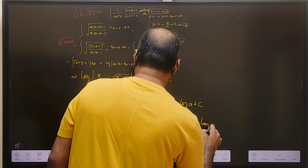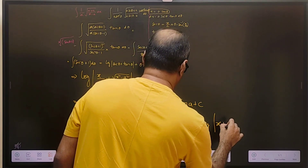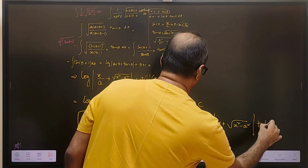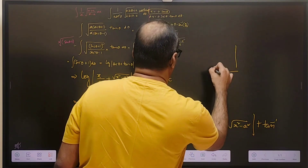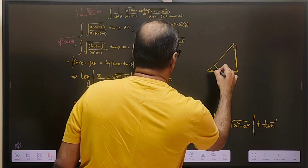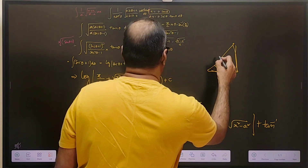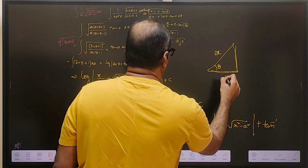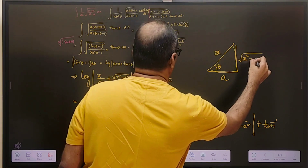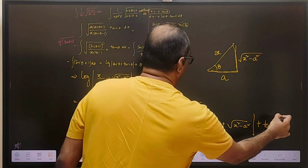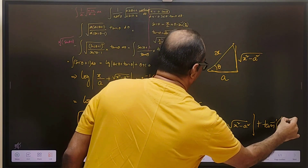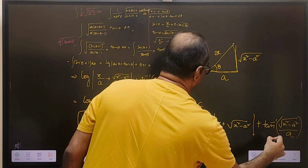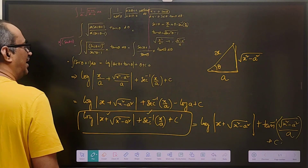This can also be written as log of (x plus root of (x squared minus a squared)). We can also change the secant inverse into tan inverse very easily. If we take the triangle where secant theta equals x by a — that is hypotenuse over adjacent — then the opposite side is the square root of (x squared minus a squared). So the answer can also be written with tan inverse of (root of (x squared minus a squared) divided by a) plus c.